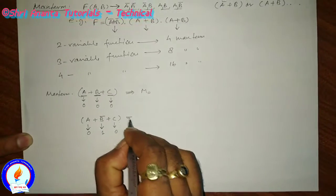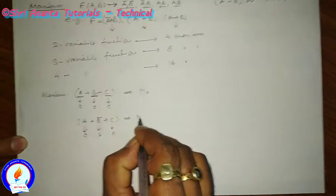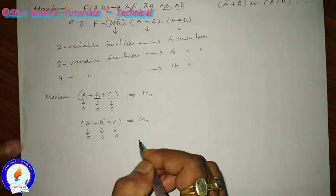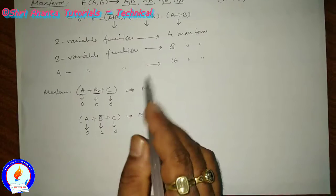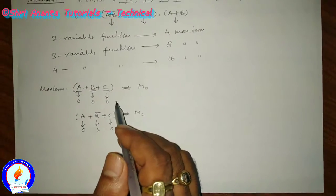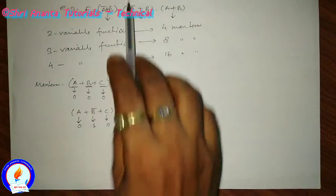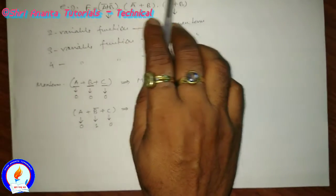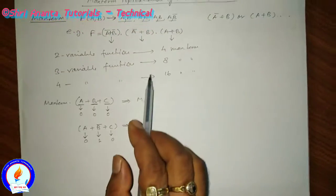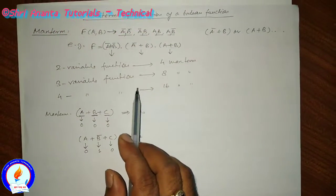So this is the max term represented as M2. In this way, the max term representation of a boolean function is accomplished.